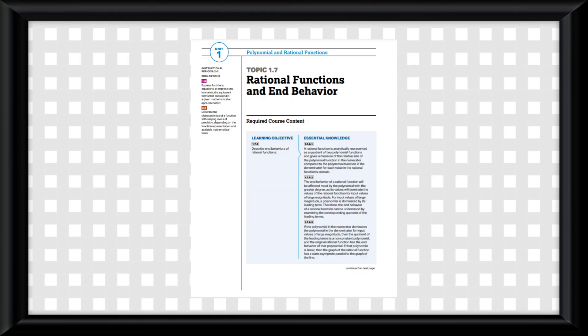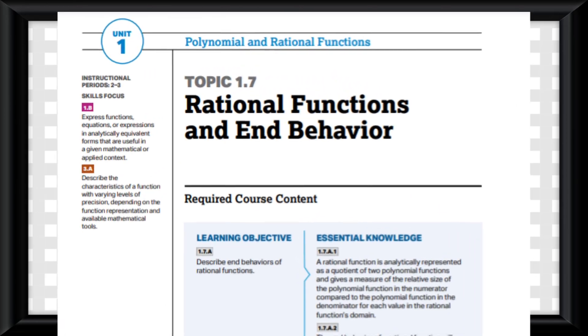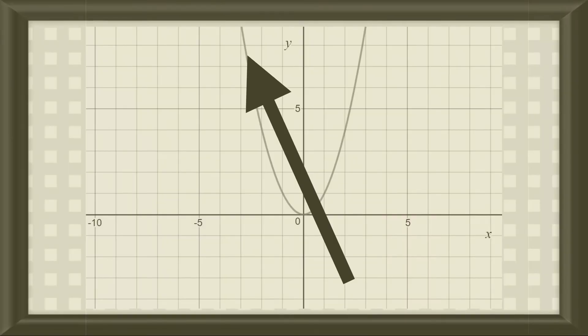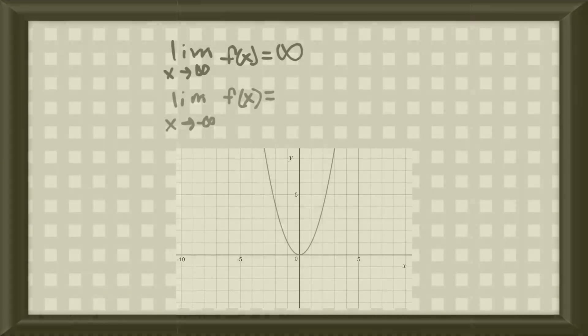This video will simply be how to calculate end behavior in rational functions, and a little bit about horizontal asymptotes. You already should know how to do this from a graph from my last video.